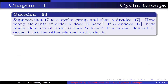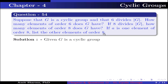Question number 54. Suppose that G is a cyclic group and 6 divides the order of G. How many elements of order 6 does G have? If 8 divides the order of G, how many elements of order 8 does G have? If A is one element of order 8, list the other elements of order 8. Given G is a cyclic group such that 6 divides the order of G.